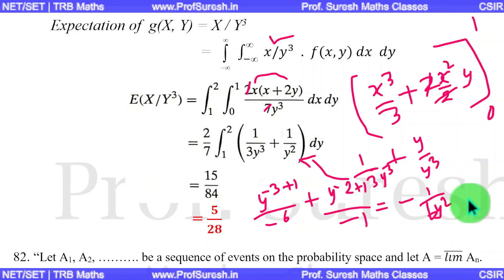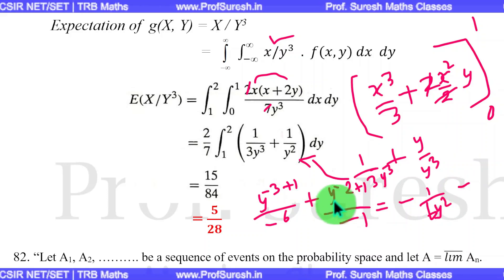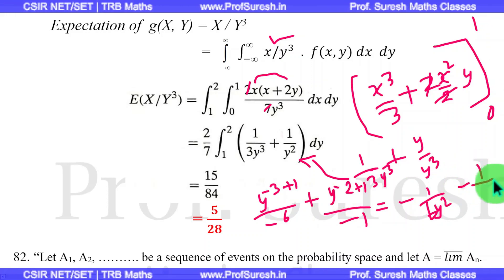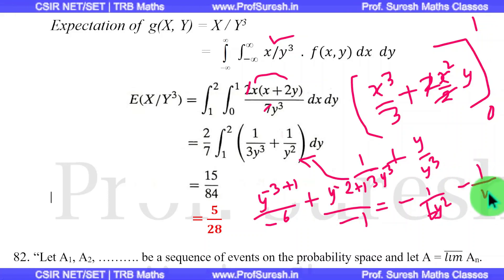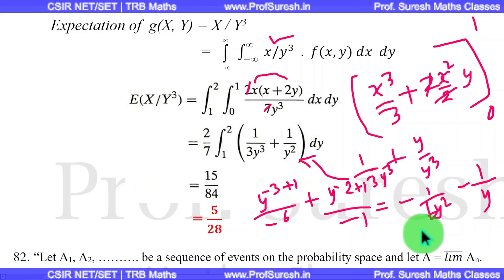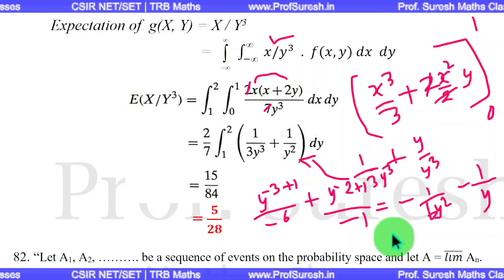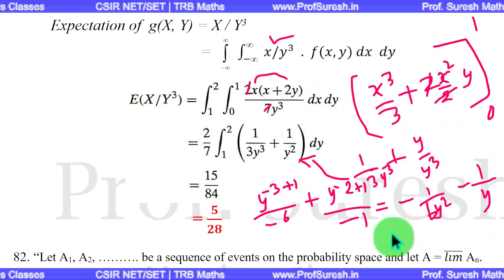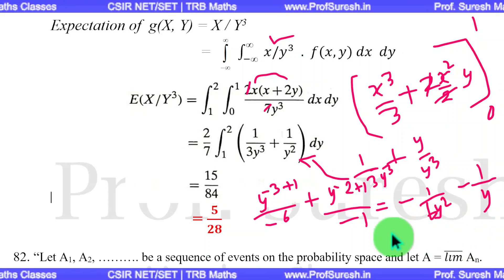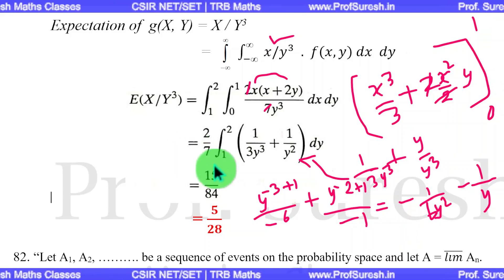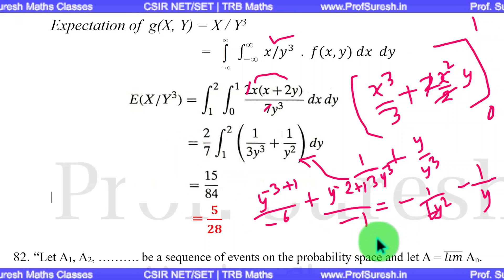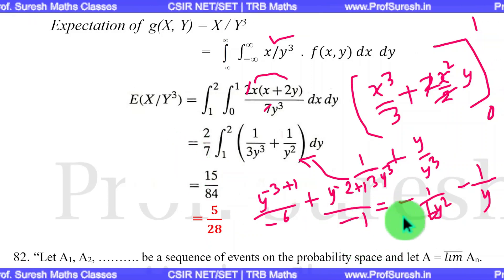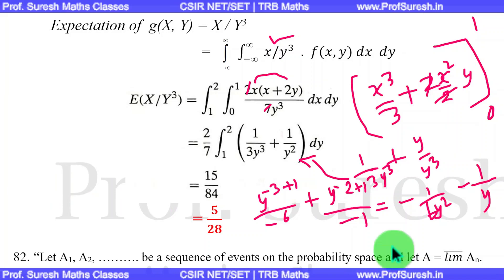So y^(−1) equals 1/y. After applying the limits and the constant (2/7), we get: (2/7) multiplied by [−1/(2y²) − 1/y] evaluated from 1 to 2, which gives (2/7) times (−2/7).